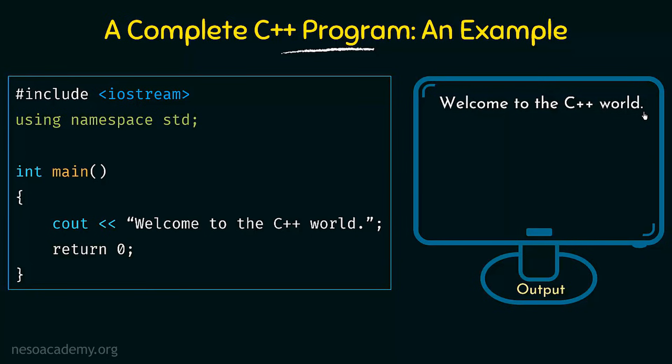That is how a complete C++ program is written — this is just a simple example. As we move ahead in this course I am going to show you how to install the compiler and how to use a source code editor in order to write programs properly. Then we will see how to compile and run the programs, and we are going to practically see and learn how things are happening. For this example I am not going to the compiler because this is just to show how a complete C++ program looks like. Anyway, if you write the same thing and compile and run it, you are going to get this output on your screen.